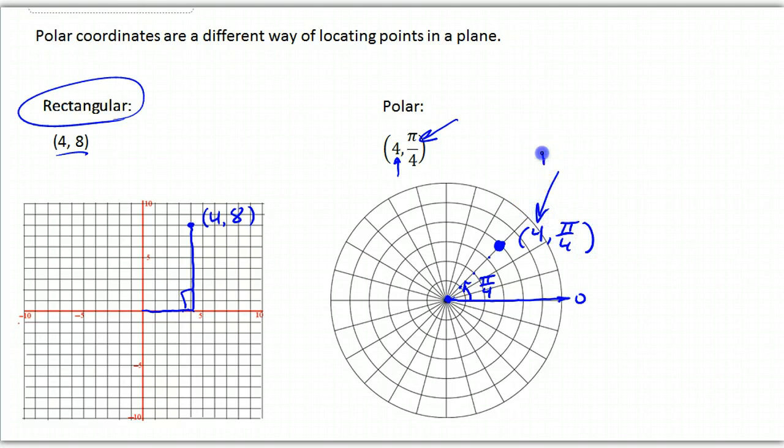This part is your radius, that's how far out you walk, 4 units, and this part is your theta, that's the angle you turn, so you're facing in the right direction to walk.